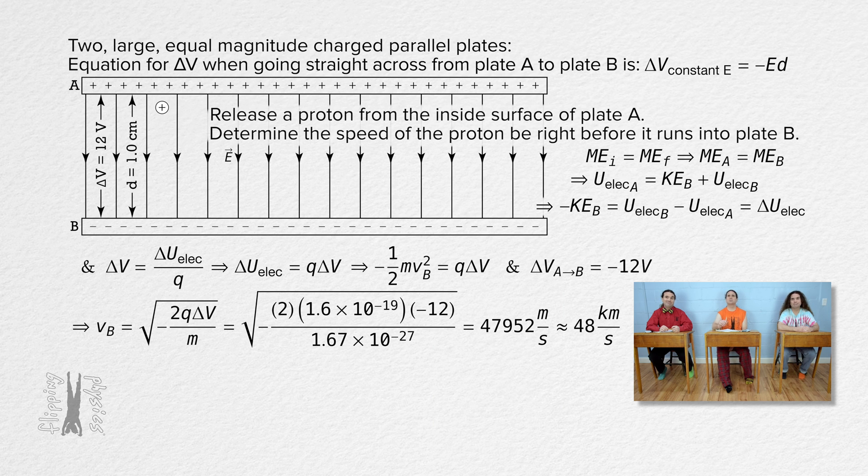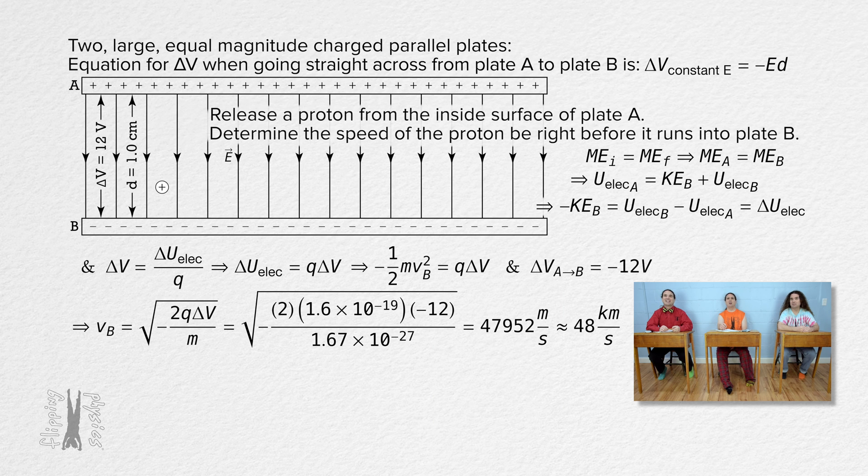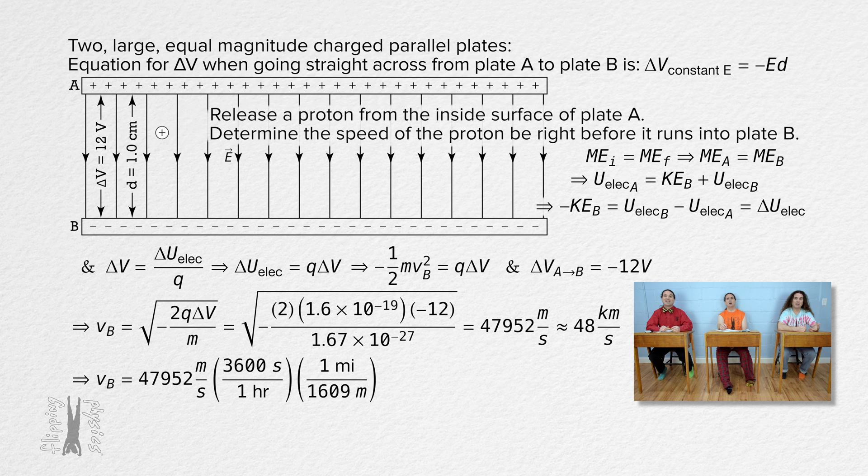Whoa, that seems really fast. How fast is that? Multiply by 3600 seconds over one hour and one mile over 1,609 meters. And we get 107,288 or 1.1 times 10 to the fifth miles per hour. Yeah. And that is fast. Yeah.